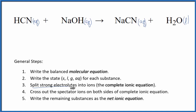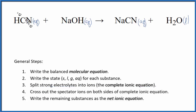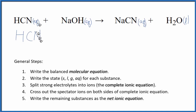Now we can split the strong electrolytes into ions — that'll give us the complete ionic equation. The key here is strong electrolytes. So HCN — we said this is a weak acid, it's a weak electrolyte. Because of that, we're not going to split it apart. Just HCN.